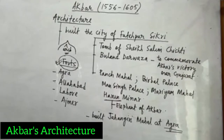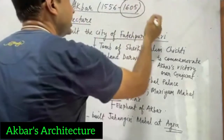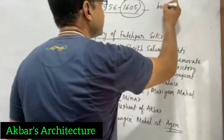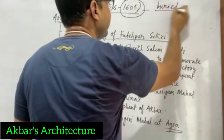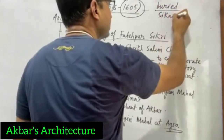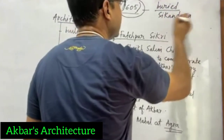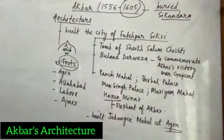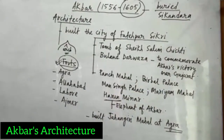It will be easy for you to remember. Akbar died in 1605 and was buried at a place near Agra. The name of that place is Sikandra. Akbar's mausoleum is in Sikandra, and these things should be kept in mind.